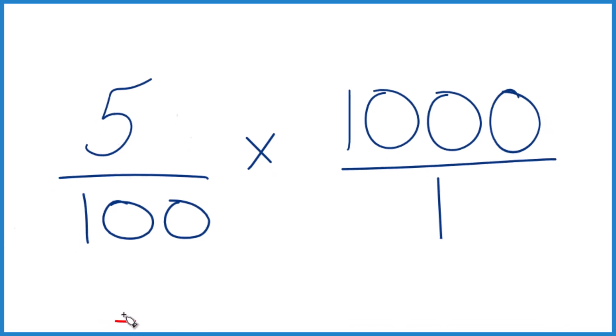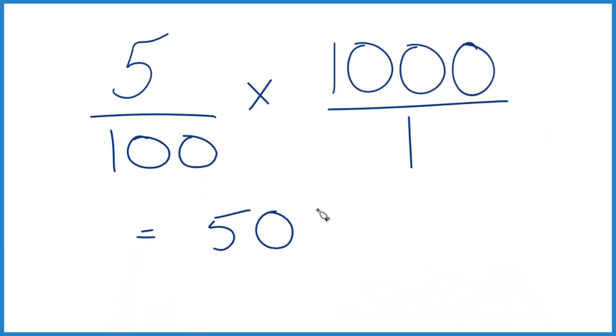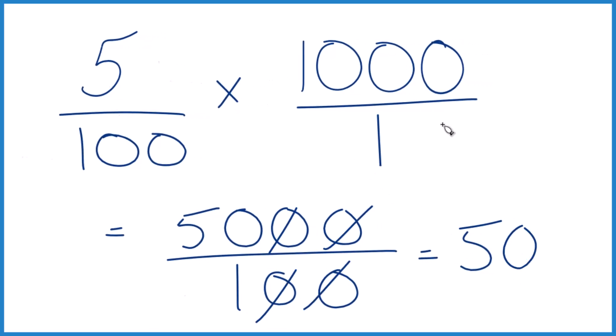5 times 1,000, that equals 5,000. And then 100 times 1, that equals 100. And if you divide 5,000 by 100, you're going to get 50. So 5% of 1,000 is 50, just like we found before.